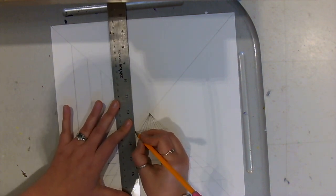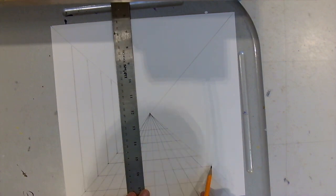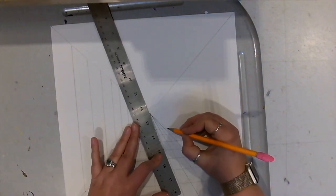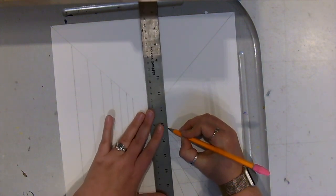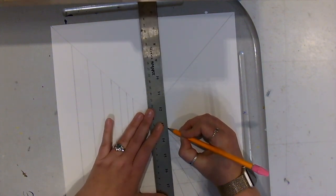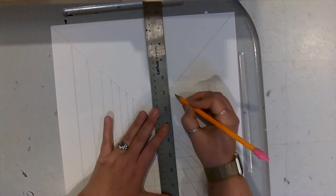Always make sure your ruler is lined up to the edge of the paper that way you can make sure you have straight lines. You're then going to do the same thing on the other side. Each of those connection points we're going to line up our ruler and create that straight line section from the bottom of the diagonal to the top of diagonal for our right wall. Same as the left wall.